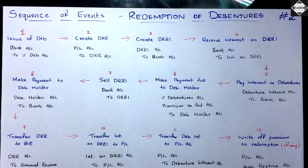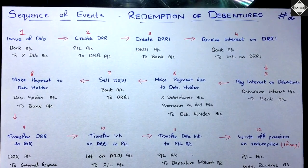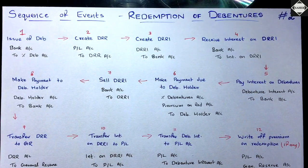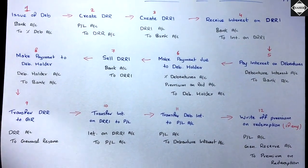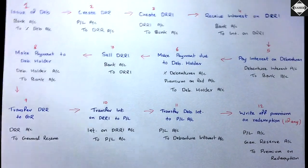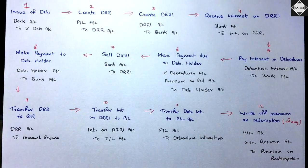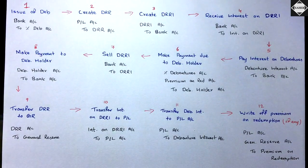That's the complete sequence of events for redemption of debentures: issue debentures, create DRR and DRRI immediately, receive interest on DRRI, pay interest to debenture holders, make payment due, sell DRRI, pay debenture holders, transfer DRR to General Reserve, close nominal accounts, and write off any premium on redemption. In the next video — the third video — we will solve a lump sum problem practically, which will clear all doubts.